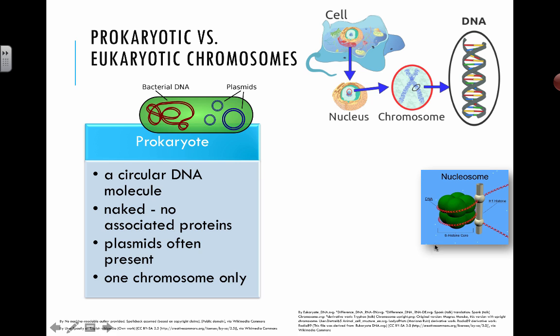In the eukaryotic cell, the chromosomes actually have little histone proteins. There's been a lot of discussion about histone proteins in topic seven when you're looking at nucleosomes as well.